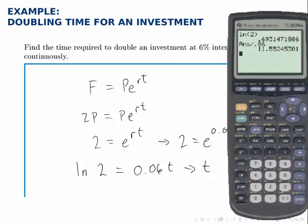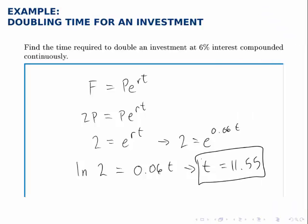So what this tells me is that it will require about eleven and a half years to double my investment with this account. And again this is something that's often used just to get a quick estimate of how good an investment really is. The shorter the doubling time the better the investment is because you double your money faster than with a worse account.